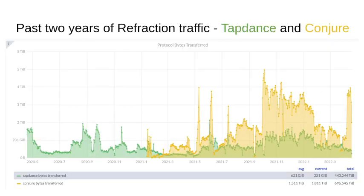Looking at the effect that TapDance and Conjure have had, we can look at usage statistics — specifically bytes transferred on the client's behalf. TapDance is shown in green and Conjure in yellow, aggregate across the entire deployment. We currently deploy to around two and a half million client devices globally. Both protocols average somewhere around a terabyte of client traffic per day, and Conjure, which came online in early 2021, does a bit better as an updated protocol and has seen significant use in the last year.